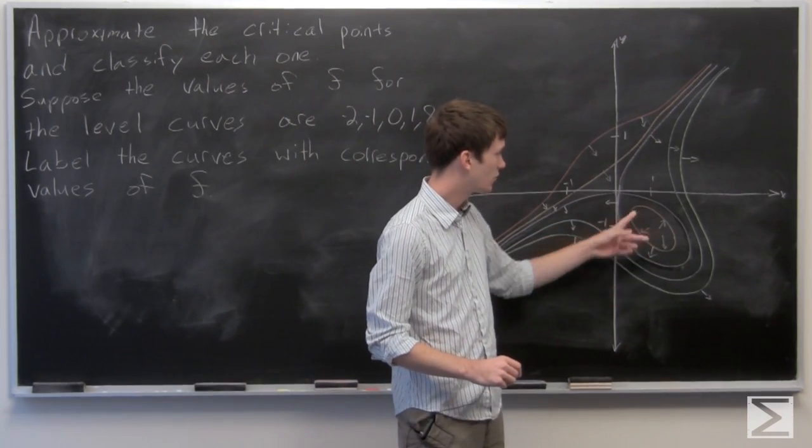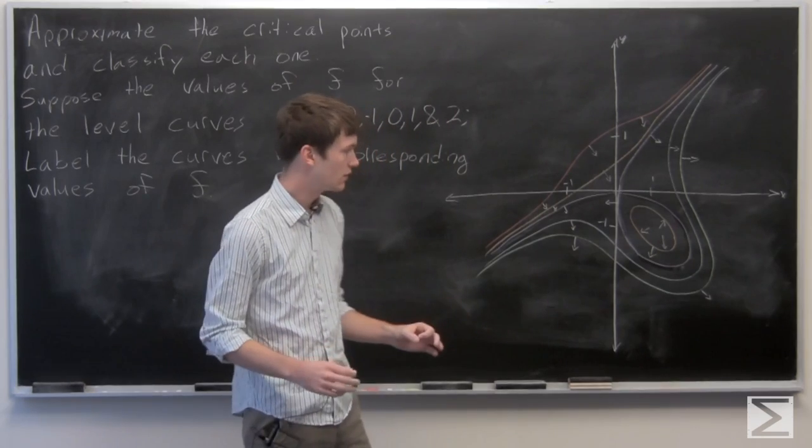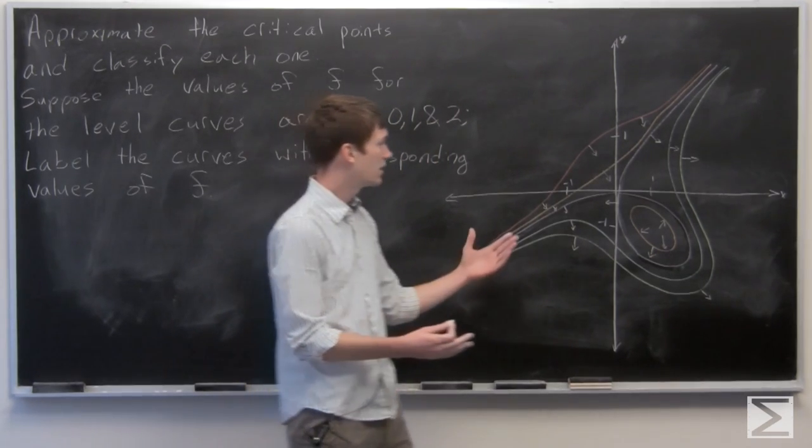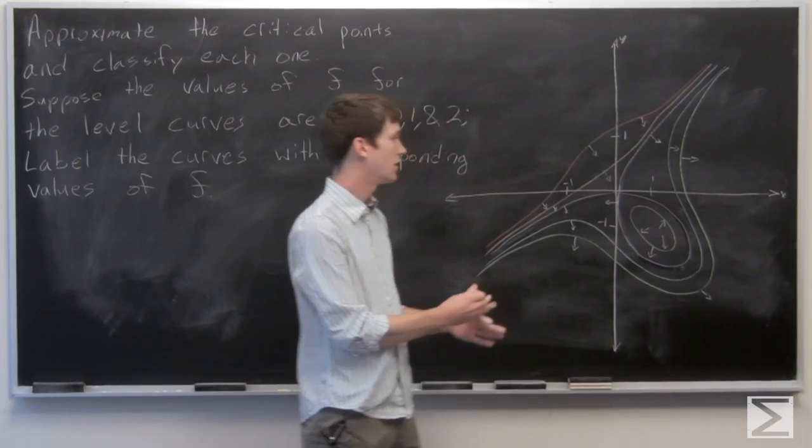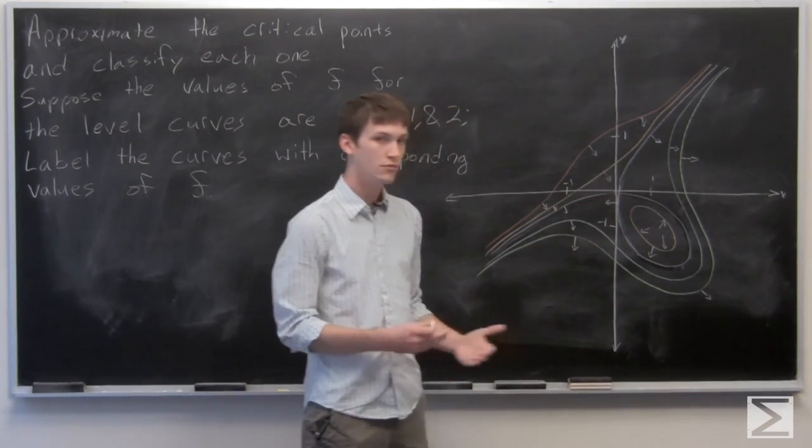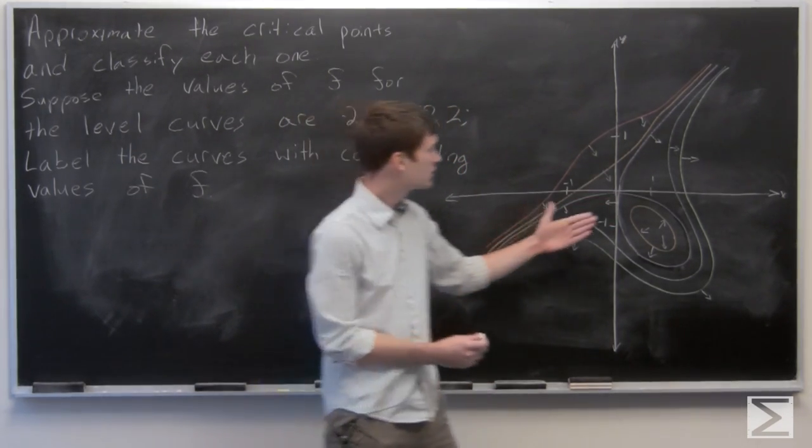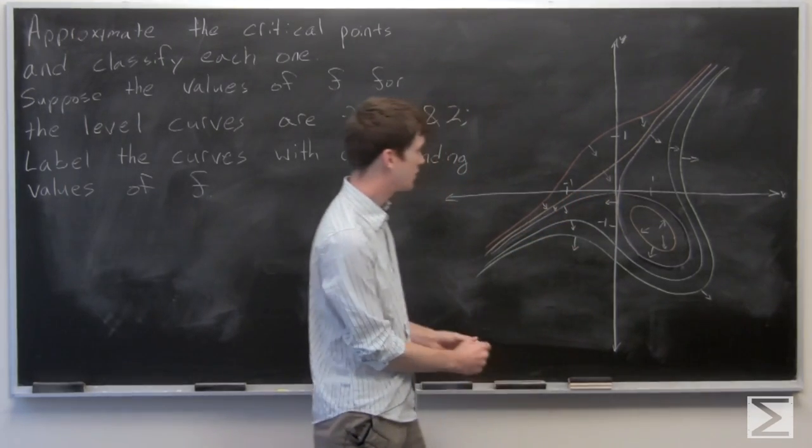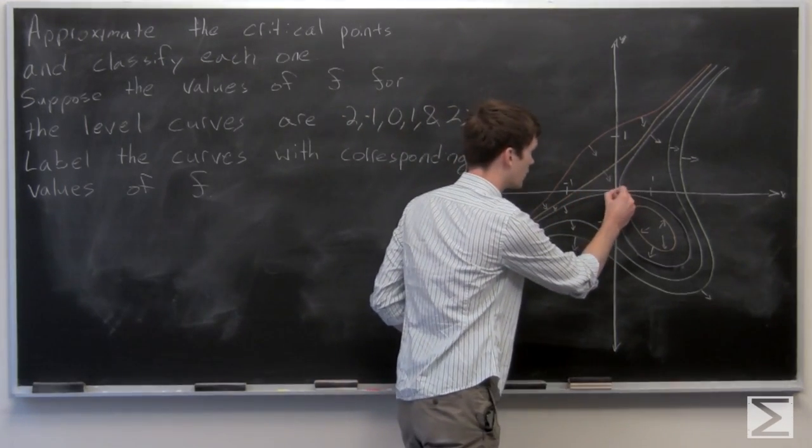We know that the critical points occur in ovals or circles and where the level sets cross, where the same level set crosses.